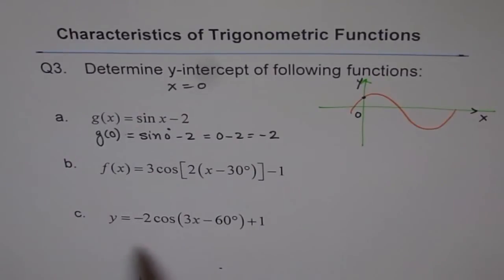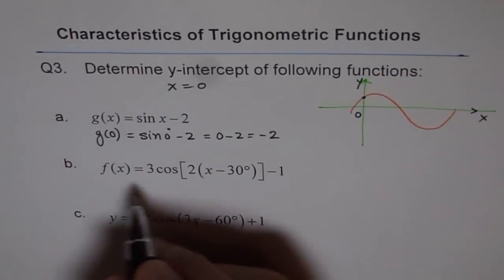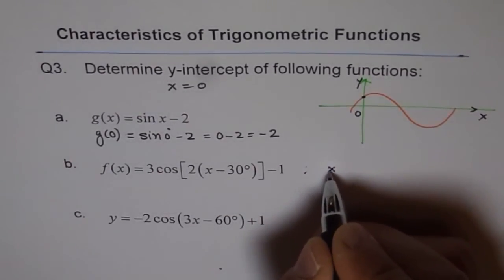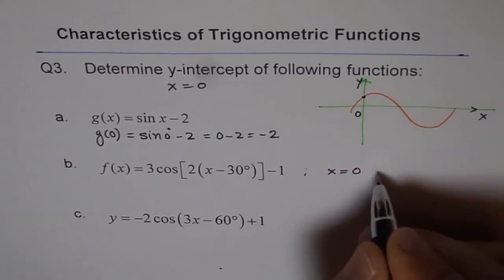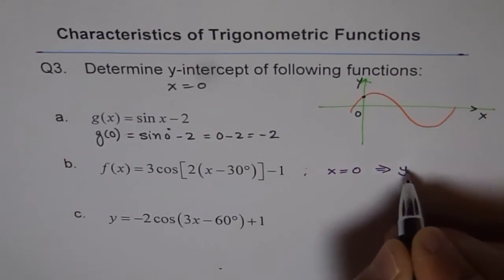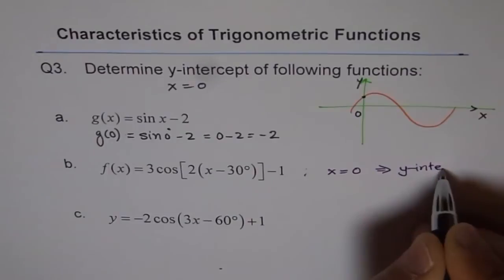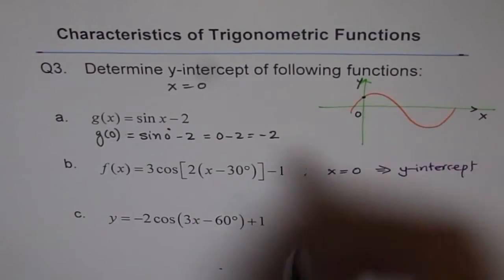I will do b for you. So as you understand, y-intercept is a point where x is equal to 0. x equals to 0 means y-intercept. As you have seen here.